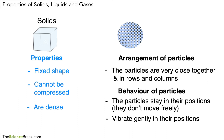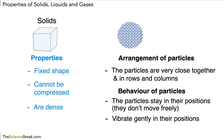Now, the important thing to be able to do here is to link the property to the arrangement or the behavior of the particles. For example, solids have a fixed shape because the particles stay in their positions and don't move freely. Another example is that solids cannot be compressed because the particles are very close together, so they cannot be pushed any closer together.